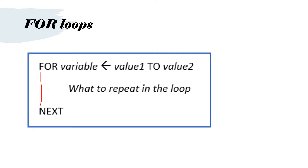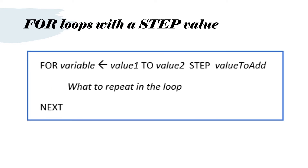Whatever you want to repeat in the loop, even if it's many lines, must always be indented. Sometimes you want to step by more than one. Usually you count in ones, but sometimes you want to count in twos or threes. Then you put the word STEP and then whatever value you want to add every time you go around the loop.